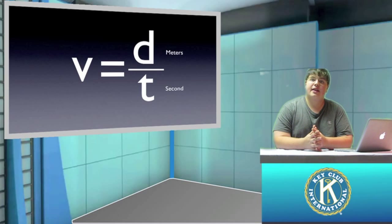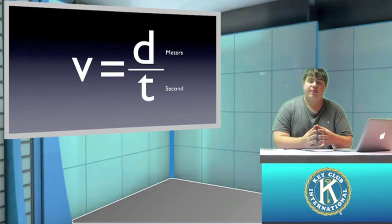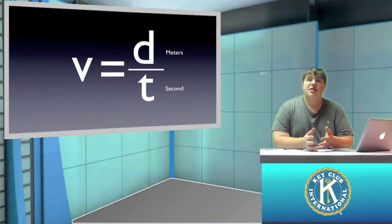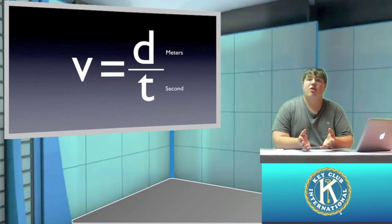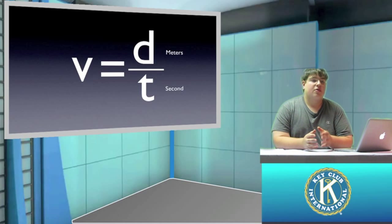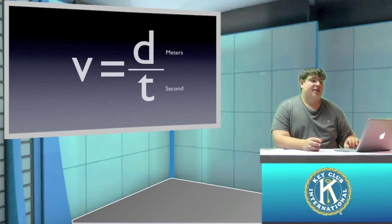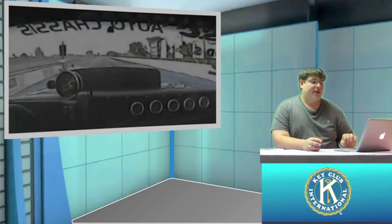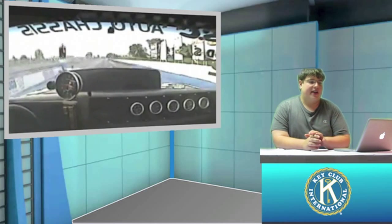So now let's look at the units for velocity. Distance we almost always measure in meters, and time we almost always measure in seconds. So the units for velocity are meters per second.